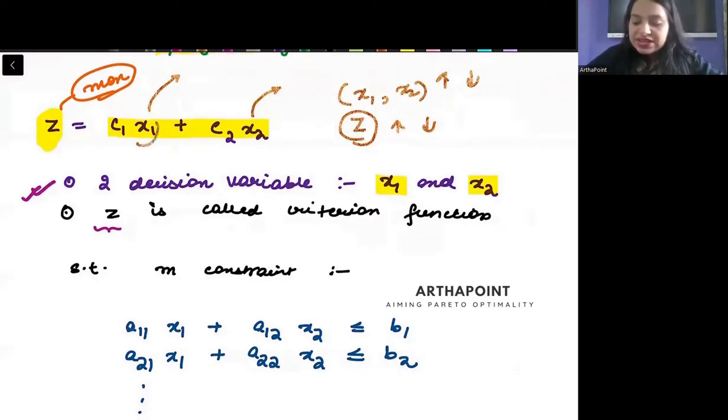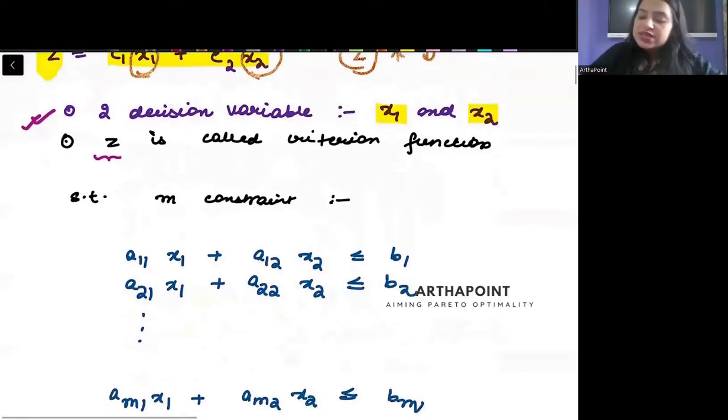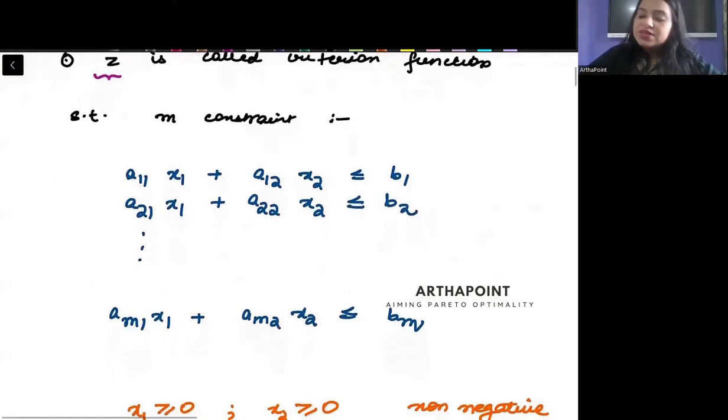So z is going to vary as x1 and x2 are going to change. These x1 x2s, these are called as your decision variables. Aapko yeh decide karna hai ki inki kya best value ho sakti ya. What is going to be their optimal value? That is what you want to decide.